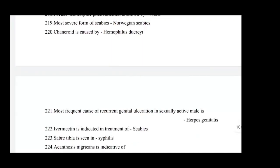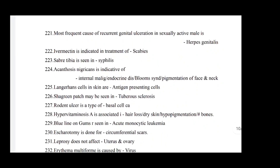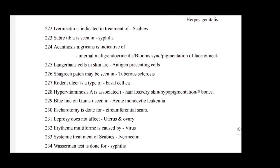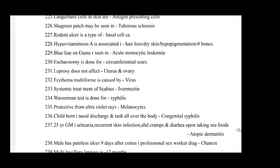Pseudoisomorphic phenomenon is shown by warts. Most severe form of scabies is Norwegian scabies. Chancroid is caused by Haemophilus ducreyi. Most common cause of recurrent genital ulceration in sexually active male is herpes genitalis. Ivermectin is indicated for treatment of scabies. Tibial saber is seen in syphilis. Acanthosis nigricans is indicative of internal malignancy and endocrine dysfunction. Pigmentation of face and neck. Langerhans cells are antigen-presenting cells. Shagreen patch may be seen in tuberous sclerosis. Rodent ulcer is a type of basal cell carcinoma.